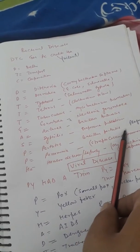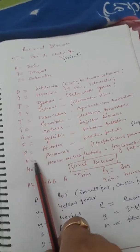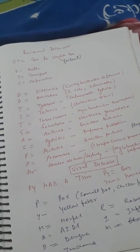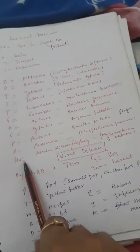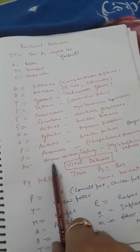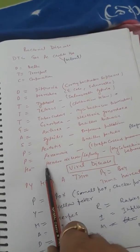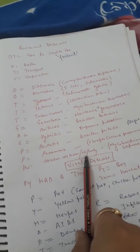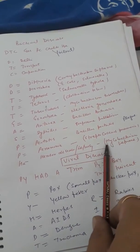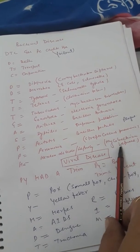Ek aur Plague hota hai aapka. By the way P se Pneumonia, Streptococcus pneumoniae ye disease cause karta hai. Ab haan, last mein aata hai H. So H is that is the Hansen disease. Hansen disease ko Leprosy bhi bolte hai jis mein Hindi mein usko Kusht rog bolte hai aur ye disease cause karta hai aapka Mycobacterium leprae.